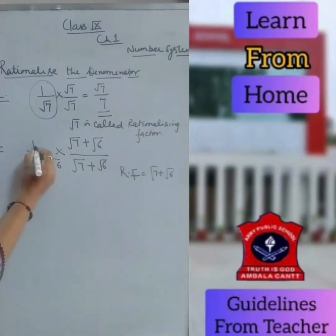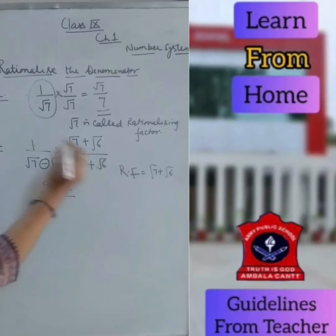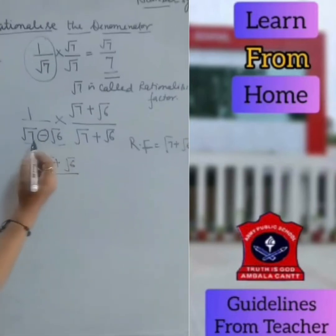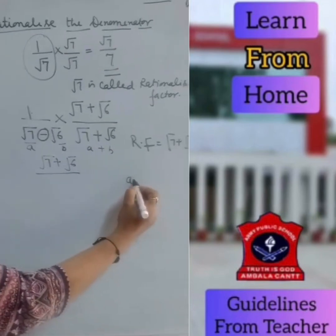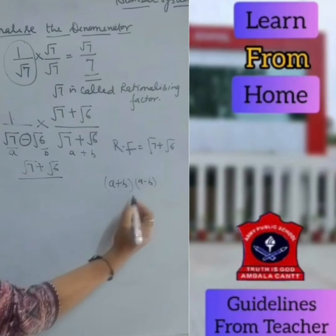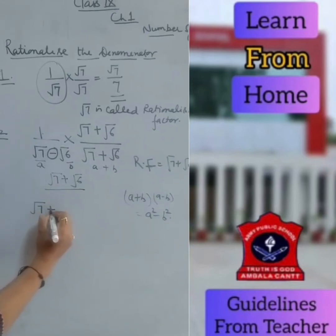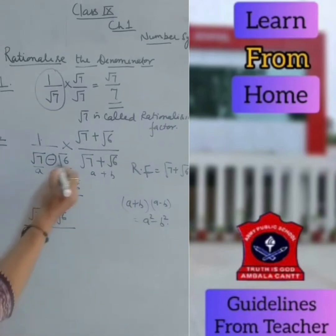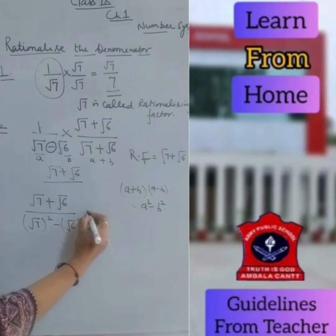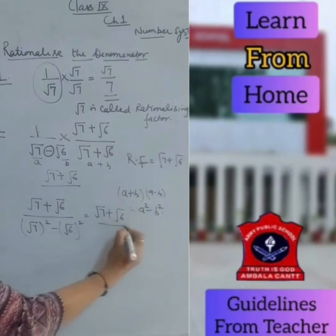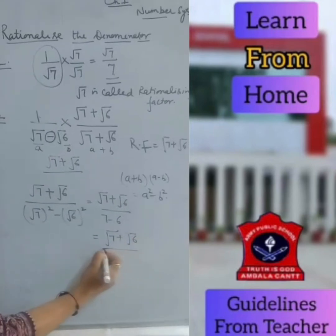Now simplify: the numerator multiplied by the numerator gives you root 7 plus root 6. Now multiply the denominators. If root 7 is A and root 6 is B, then the denominator is A minus B into A plus B. Using the identity A plus B into A minus B equals A squared minus B squared, the denominator becomes root 7 squared minus root 6 squared, which is 7 minus 6, equal to 1. So ultimately you get root 7 plus root 6.